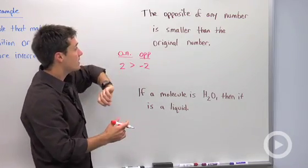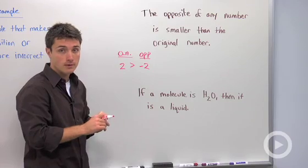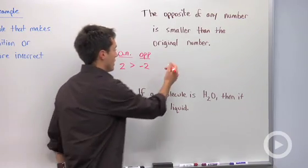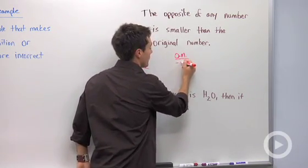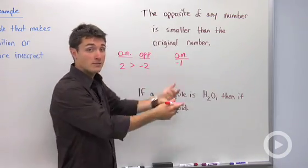Or the way of stating it here is the opposite is smaller than the original. But is this always true? If I picked an original number that was negative, let's say negative 1, the opposite of negative 1 is positive 1.